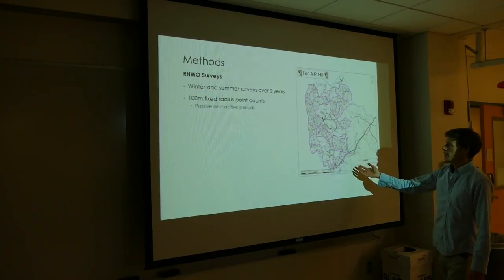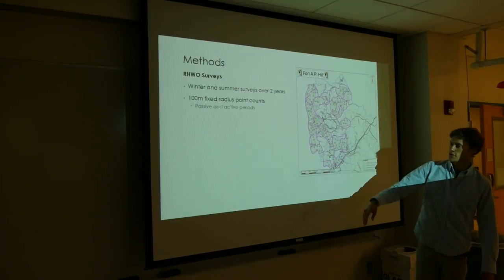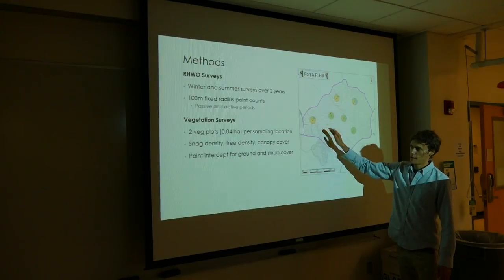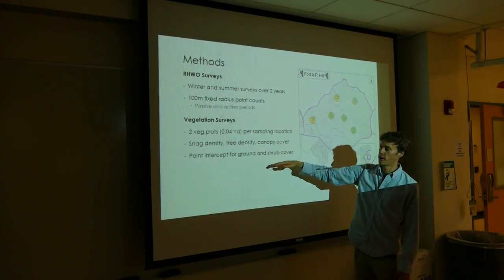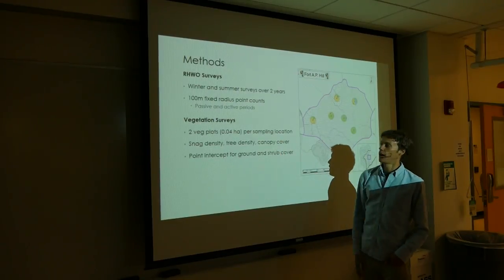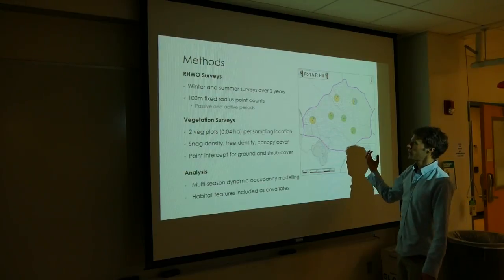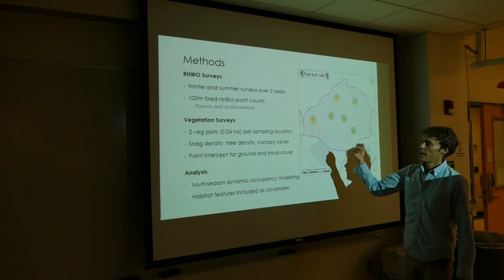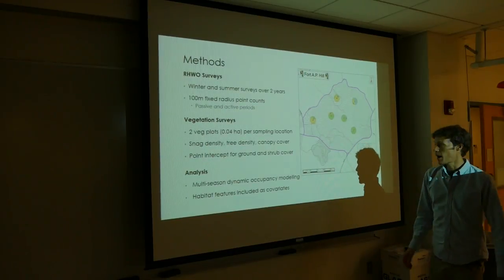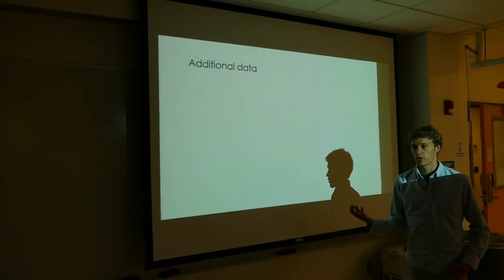This is A.P. Hill. I counted birds at all of these sites where there are points. And then took vegetation measurements, and I measured a number of vegetative and structural characteristics that I thought are going to be important for the species. I'm going to use my vegetation data in combination with my detection data to inform my occupancy models, and see what features in the landscape are important for the Red-headed Woodpecker.